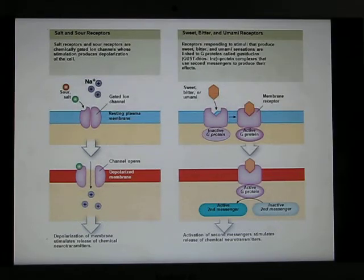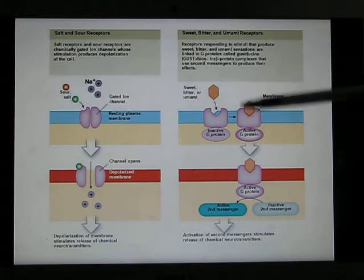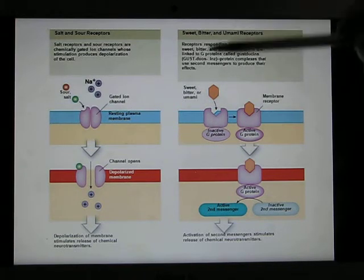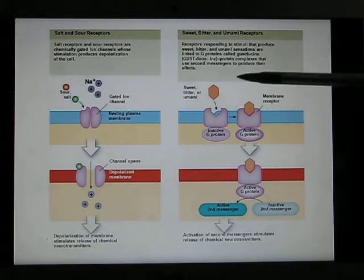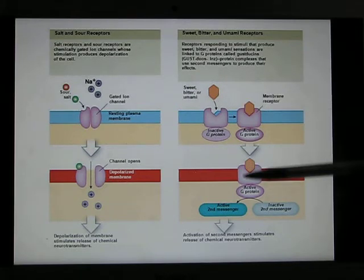Now let's look at the other three: sweet, bitter, and umami. They don't use ion channels — they have receptors. They bind with the receptor, and this triggers the second messenger system.